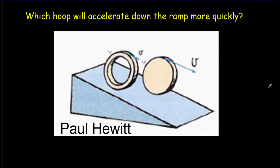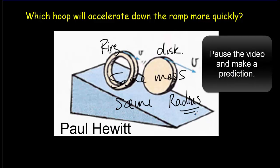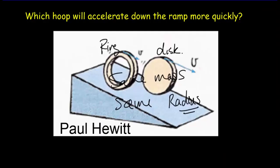We're going to have a little race — predict the winner. We've got a ring and a solid disc, both with the same mass and the same radius, started from the top of an incline. Which one gets to the bottom first? That excerpt was from the North Carolina School of Science and Mathematics. The disc won, because its mass is distributed more closely to the axis of rotation — the center of the disc. The ring has more rotational inertia, it's harder to make it increase its rate of rotation, and so it loses the race.